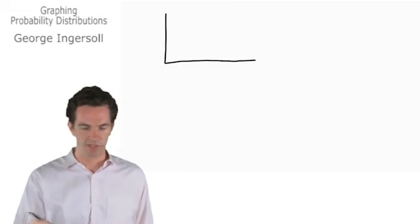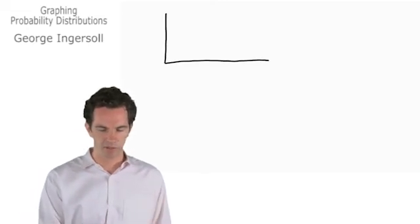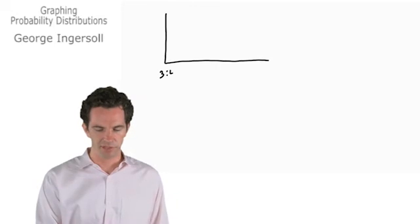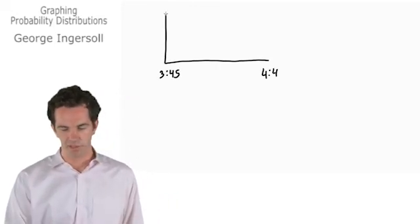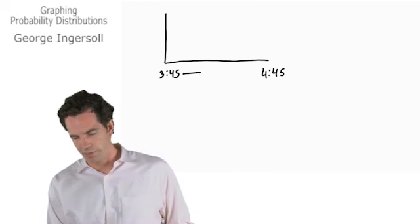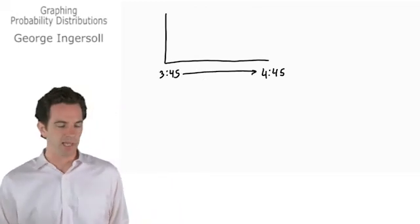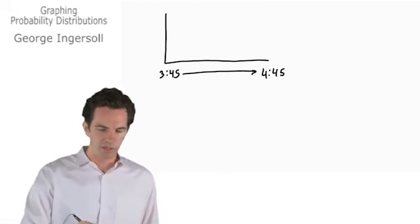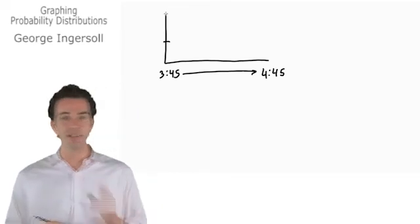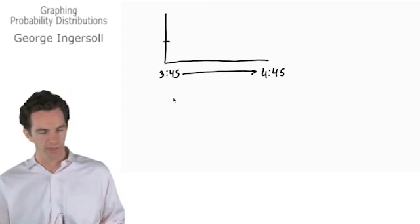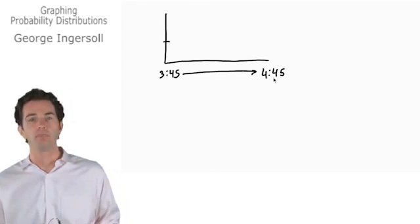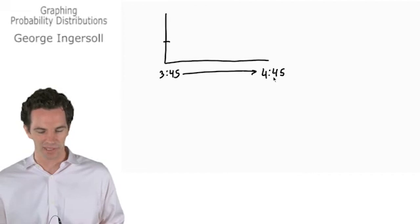We might graph this out as this is going to be 3:45, that's his earliest possible arrival time. This is 4:45. These are all the possibilities in between and they're all equally likely. Our probability of him arriving at any specific minute, we have a whole hour here. All minute arrival times are equally likely.